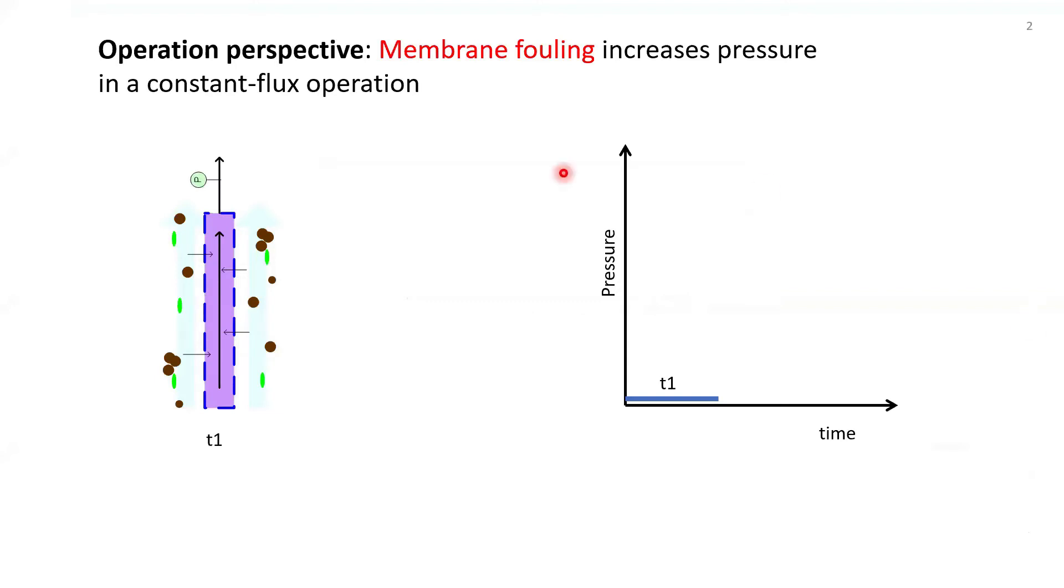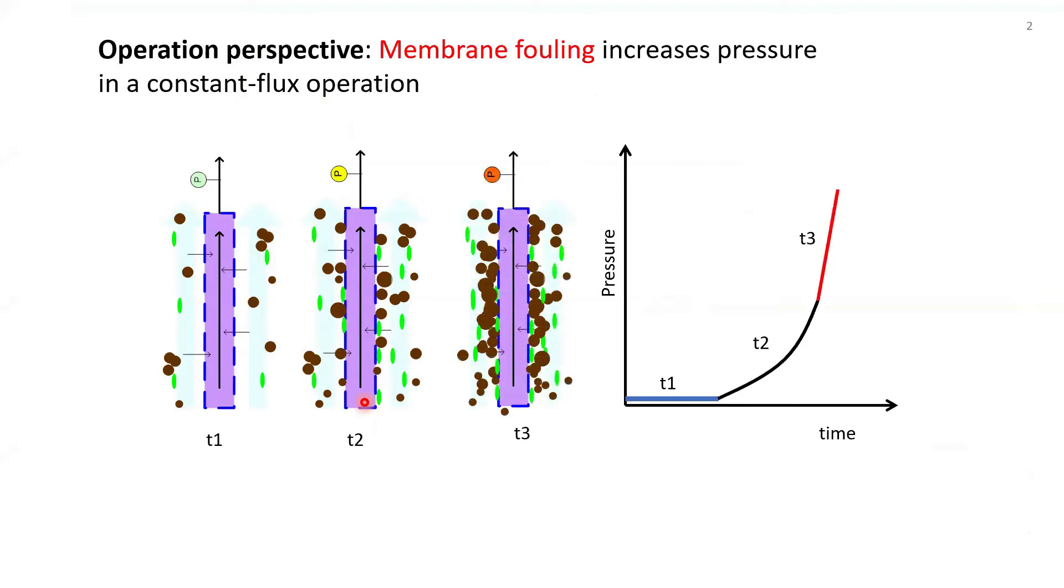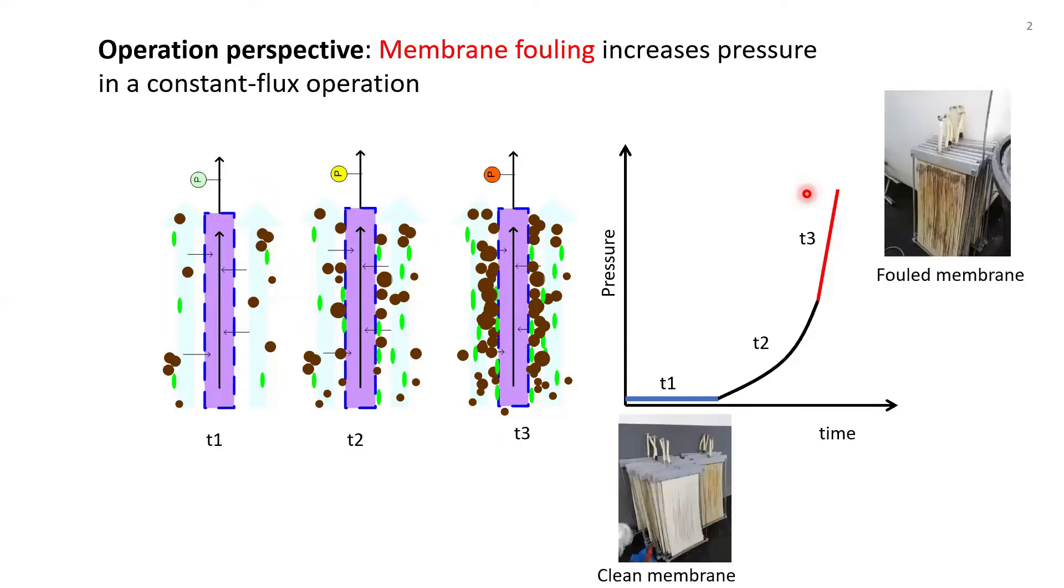To give an introduction, let's see from the operational perspective. Normally, membrane process for liquid filtration is operated at a constant flux system. What happens is that as time passes by, you start to develop the fouling layer on membrane surface, as you can see here. As you continue the filtration, it will reach what we call a threshold flux, when normally at this time you have to stop the operation and perform the cleanings.